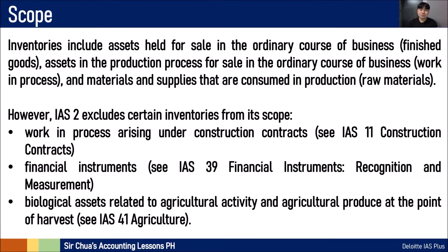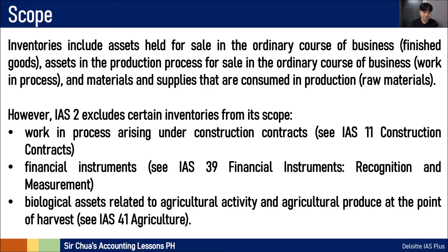Inventories include assets held for sale in the ordinary course of business. In terms of manufacturing, once materials are fully processed from raw materials through the production process until finished, that's what we call finished goods inventory. In a merchandising setup, it's simply buy and sell — we count the inventories we will sell, and that's merchandise inventory. Assets held for sale in the ordinary course of business.